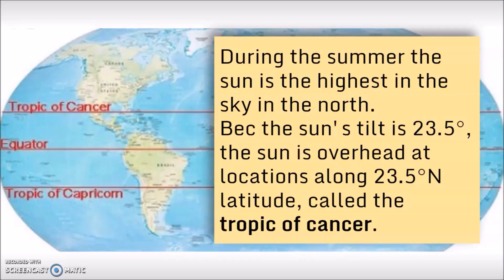During the summer, the Sun is the highest in the sky in the north, and because the Sun's tilt is 23 and a half degrees, the Sun is going to be completely overhead at locations along 23 and a half degrees north latitude, and this line on the map is called the Tropic of Cancer.